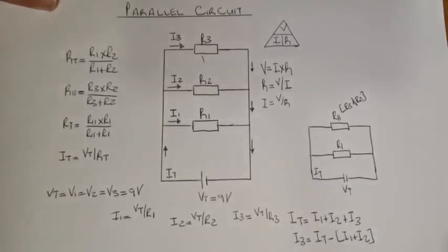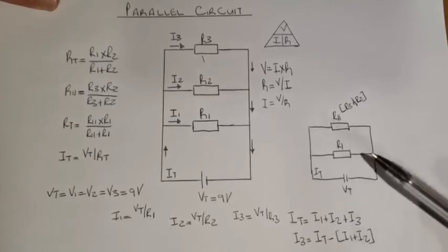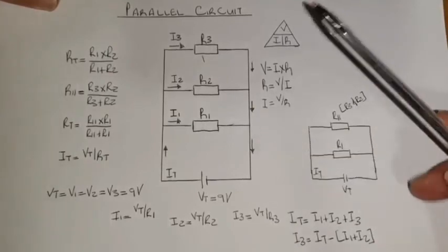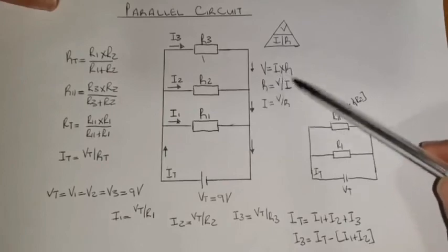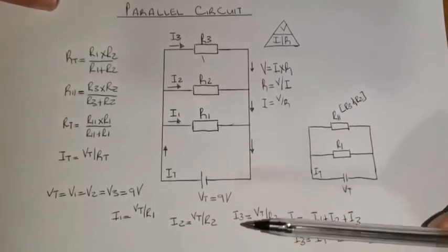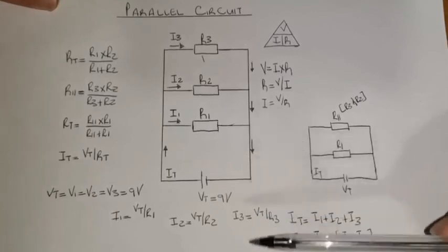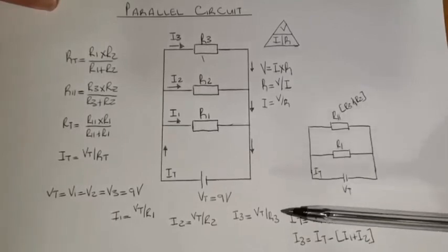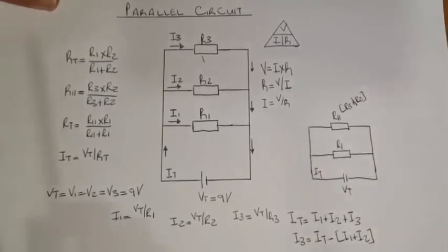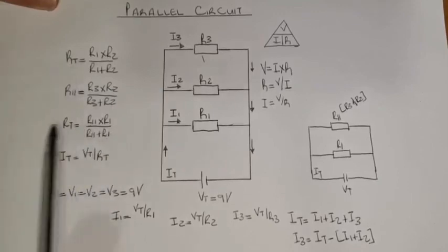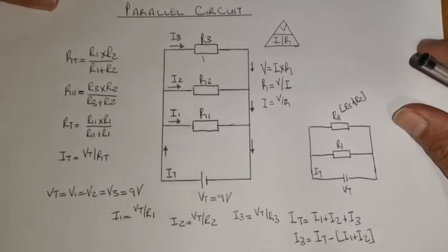Alright, that is how you will solve a parallel circuit like this. First and foremost, understand the law. Next, when you start solving the problem, draw your pyramid, write down your formulas from that pyramid, and then start calculating — total resistance, total current, and your currents through the branches. For these circuits, knowing the total resistance is very, very important. Thank you very much and thanks for watching.